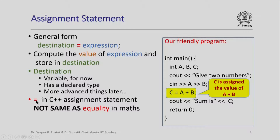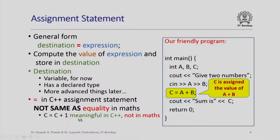The equal symbol in a C++ assignment statement is not the same as equality in mathematics, and this is very important to keep in mind. For example, 'C = C + 1' is a meaningful statement in C++ — it means compute the value of C plus 1 and store it in the variable C again. However, this is not a meaningful statement in maths because for every value of C, C cannot be equal to C plus 1.